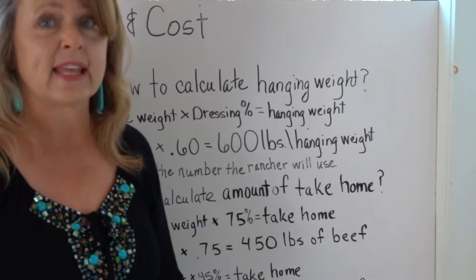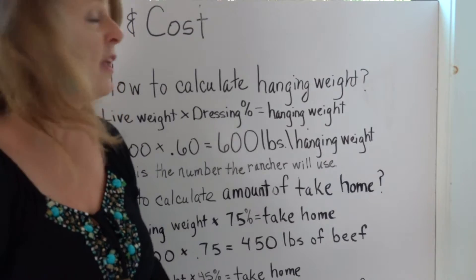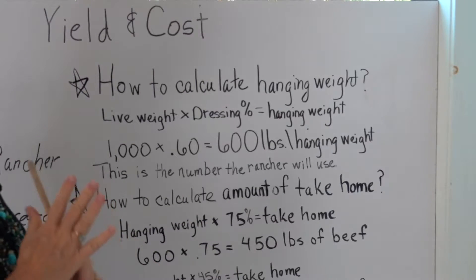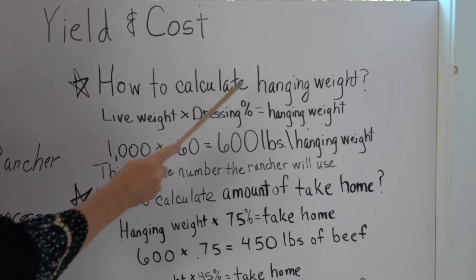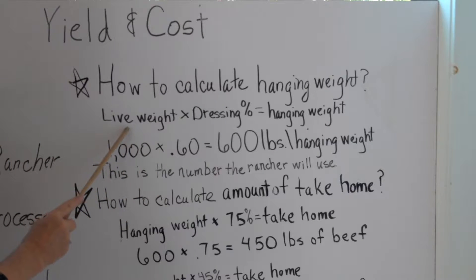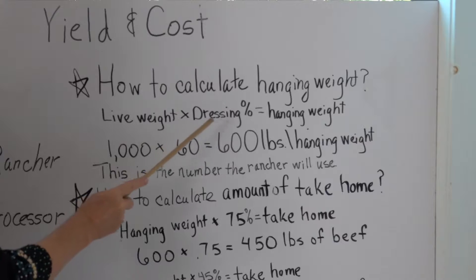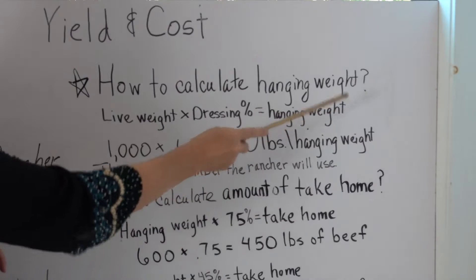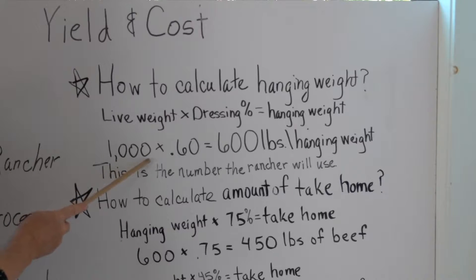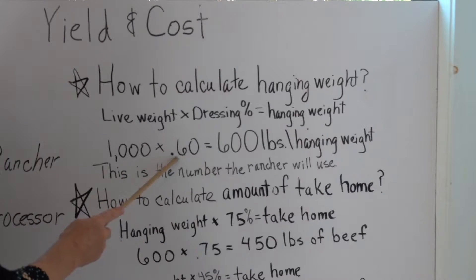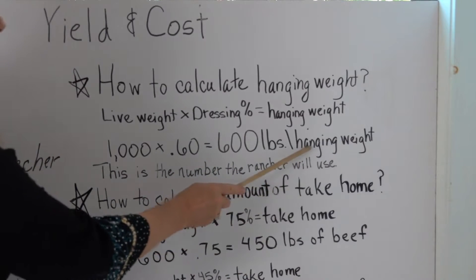The first thing you're going to learn to calculate is the hanging weight, because it's super important that you understand this calculation. I'm going to focus on the whiteboard so you don't get confused. To calculate the hanging weight, you take the live weight and multiply it times the dressing percentage and you will get hanging weight. We're using a 1,000-pound animal times 0.60, and that gives us 600 pounds for the hanging weight.